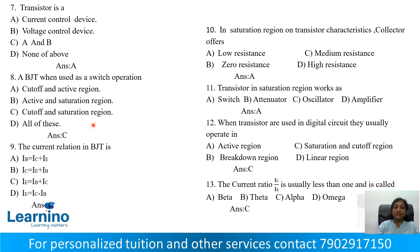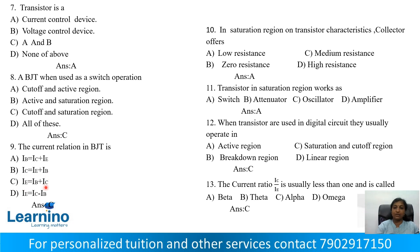The correct answer for the current equation is Option C: IE = IB + IC. In the saturation region, the transistor's collector offers Option A: Low resistance. Correct answer is Option A.